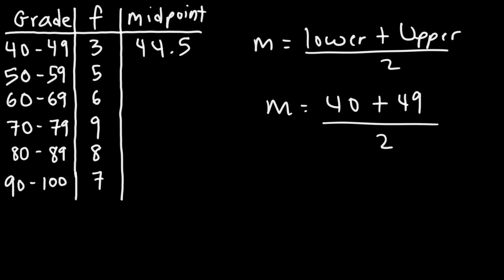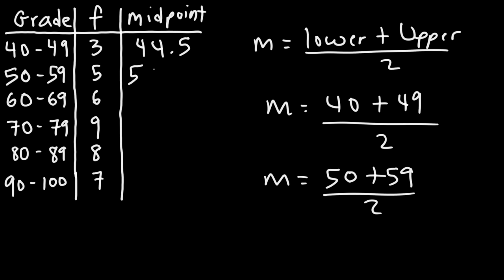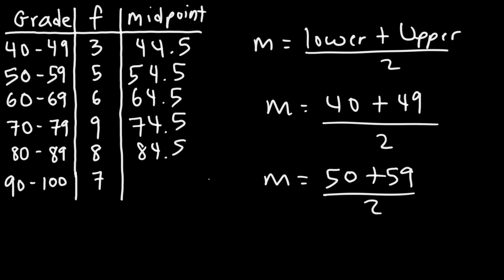For the next interval, the midpoint is 50 plus 59 divided by 2, which is 109 divided by 2, equaling 54.5. At this point we can see a pattern — the next midpoints are 64.5, then 74.5, then 84.5. The last interval is different: 90 plus 100 is 190 divided by 2, which equals 95.